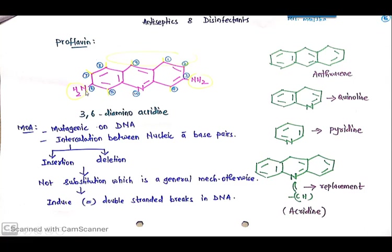If you properly observe this ring, this is basically the primary structure that is anthracene: 3 benzene ring fusion. But in this middle ring, the structure contains nitrogen. If you take only 2 rings into consideration, this structure will be quinoline.